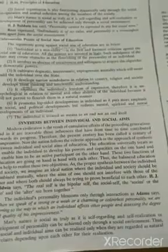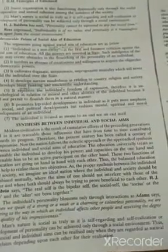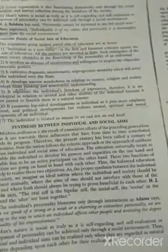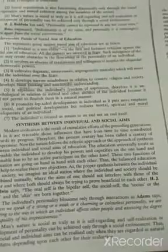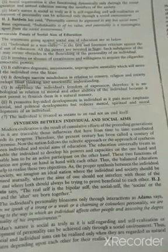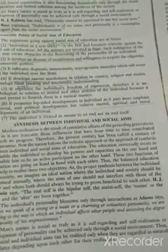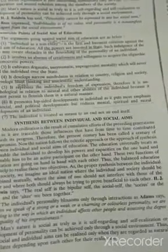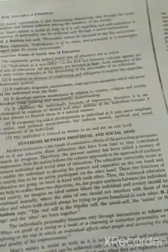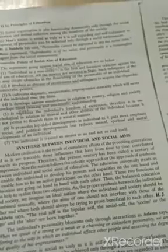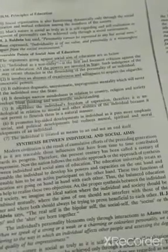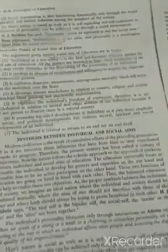It develops narrow-mindedness in relation to country, religion, and society. It develops blunt thinking and unscientific understanding — most importantly, it develops narrow-mindedness. It suppresses the individual freedom of expression — it stops the individual from freely expressing themselves. Because you are a social person related to certain people, organizations, and society, you are not free to do things. So there is an absence of freedom.